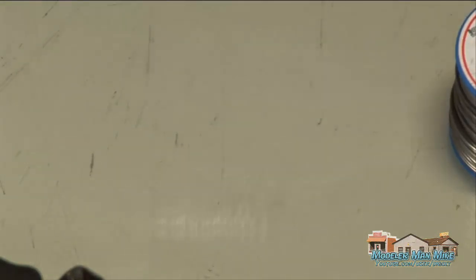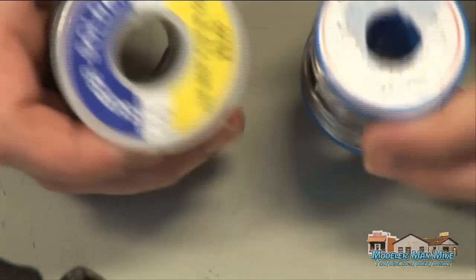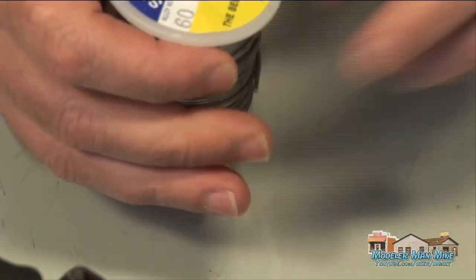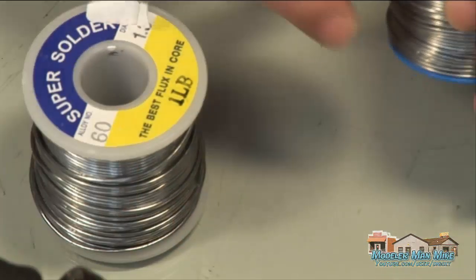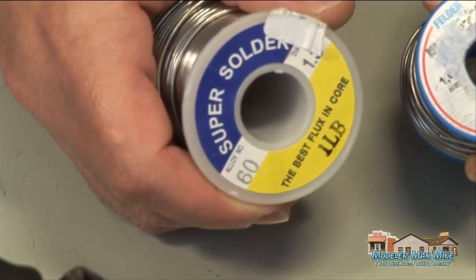Diameter matters when you are soldering. Thicker diameter is going to apply more solder, and the smaller one is going to apply less solder. So small objects or small things that you're trying to solder, you want to use a smaller diameter. Track and things like that, you'll use a larger diameter.